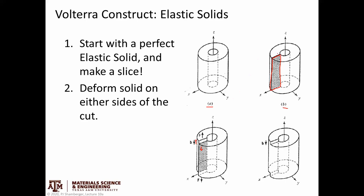The important thing is that in the original material, if I draw a line all the way around, this circuit connects and closes on itself. Whereas after I've introduced a cut and displaced one side relative to the other, if I make that same circuit, it doesn't connect anymore. That means there's some residual elastic stress and strain in the system. That displacement is what we'll talk about when we discuss dislocations, because it's going to ultimately become the Burgers vector.